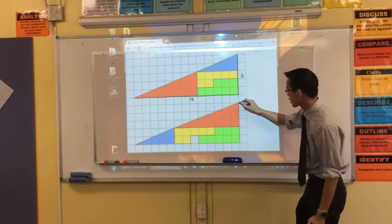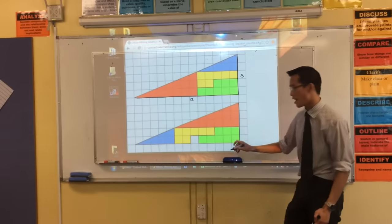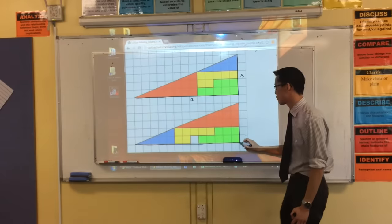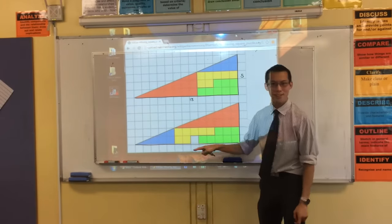And suddenly, you've got the same 5 by, you can count it and double check. Okay, 5 by 13 triangle, right? But now there's a hole, right?